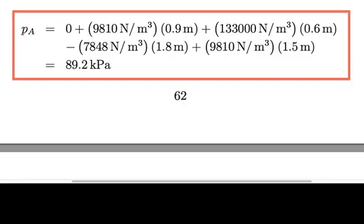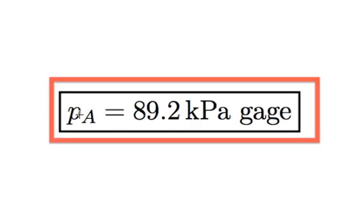Here's the calculation. So the pressure at A works out to be 89.2 kilopascals gauge. You see the specific weights of each fluid and the elevation changes right here. Notice in the final answer that you always want to specify which type of pressure. So we have 89.2 kPa gauge.